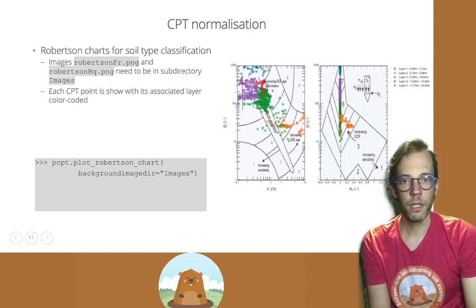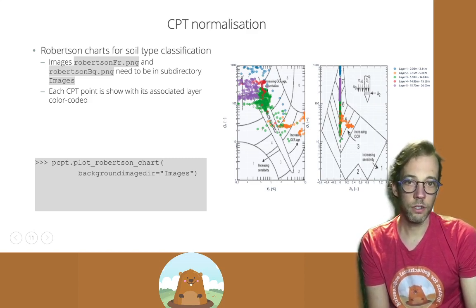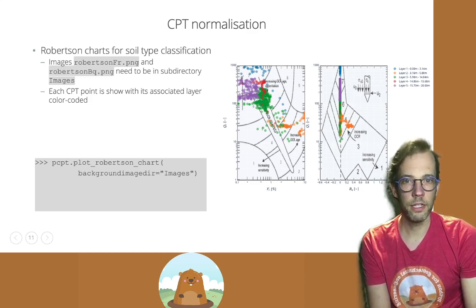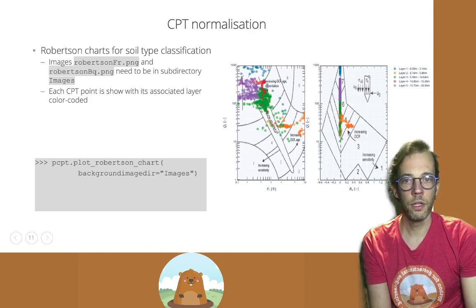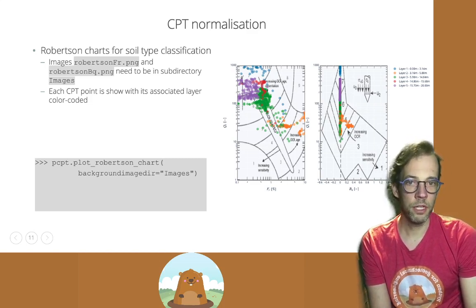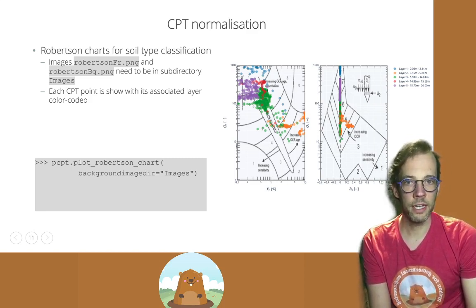The Robertson charts are charts which have been widely used to classify CPT data and classify layers into certain soil properties. The Robertson charts are included with the groundhog package. And there are two image files, RobertsonFR and RobertsonBQ.png, which can be used to overlay the data on top of.